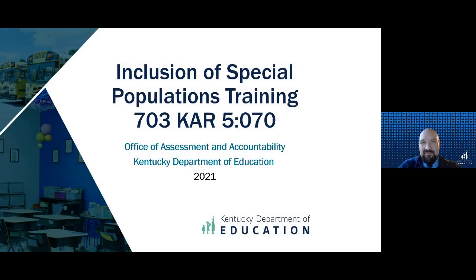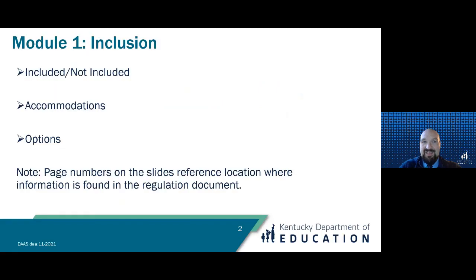Hello, I'm Jason Howard and welcome to the Inclusions of Special Populations Training, 703 KAR 5:070. This is module one of eight that make up this entire training. In module one, we will take a close look at who is and is not included, accommodations, and the options available, all per the inclusions regulation. During this module, we will take a closer look at each of these areas and describe the intentions and specifics of each.